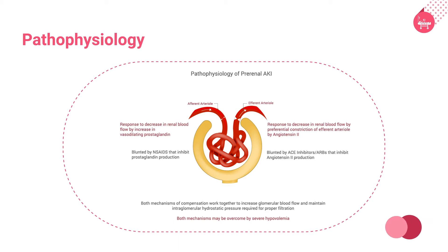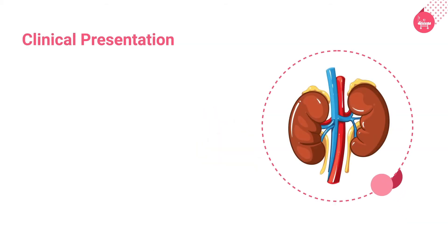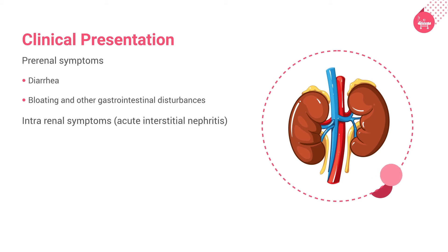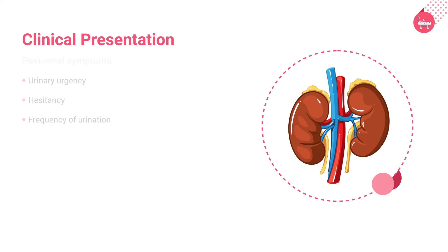The clinical presentations of AKI are categorized based on the phase of the disease. Prerenal symptoms include diarrhea, bloating, and other gastrointestinal disturbances. Intrarenal symptoms, such as in acute interstitial nephritis, include wheeze, rash, itching, and pruritus. Postrenal symptoms include urinary urgency, hesitancy, and frequency of urination.